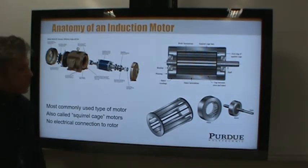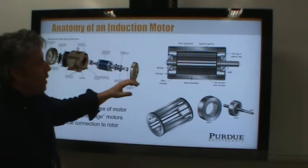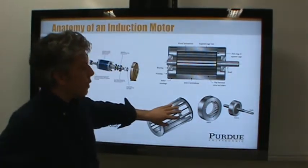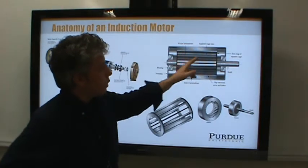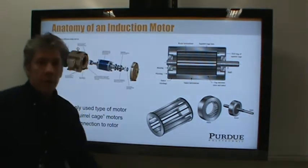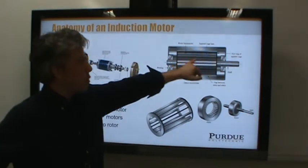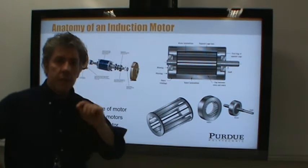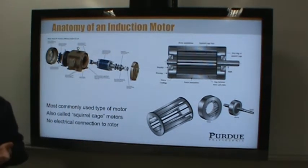The interesting thing about these types of motors is that the rotor, which includes the squirrel cage and rotor laminations, has no electrical connection to it. There is current that flows through the rotor, but that current is induced into it — it's inducted, kind of like a transformer.